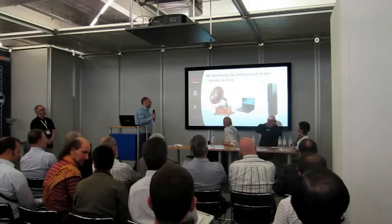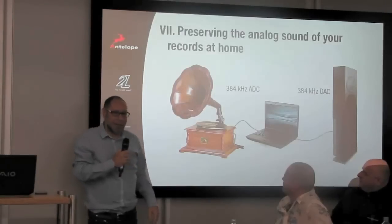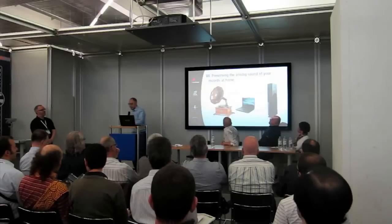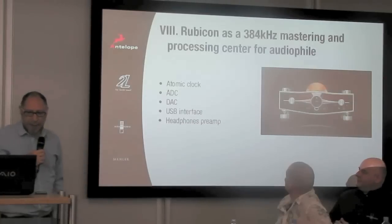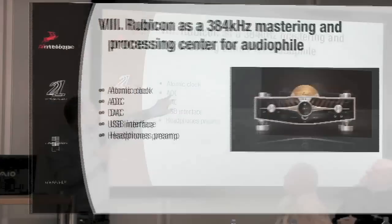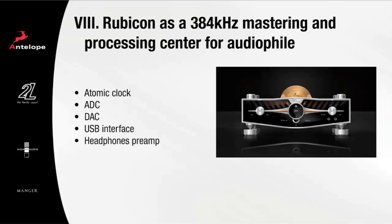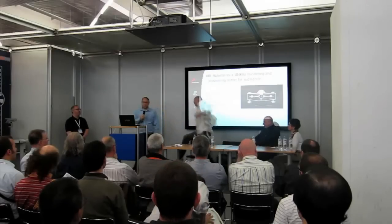So what can you do with this? Well, one of the things you want to do is if you are an LP lover and you have some records, it would be nice to digitize them at much higher sample rates because it's going to sound a lot closer to your original LP. What kind of equipment can you use? There are a few things available on the market, including our own unit that we're showing today — it's called Rubicon. It's a 384 kHz mastering and processing center for audiophiles. You have a 384 kHz A-to-D and D-to-A converter, a USB interface, an atomic clock that takes care of jitter issues, and a nice headphone preamp. Come check out this unit, and I'm going to pass the microphone to the next presenter who's going to talk about how high sample rate recordings are actually mastered. Thank you.